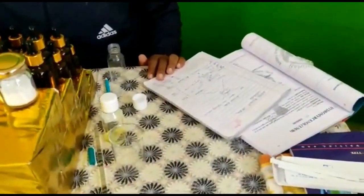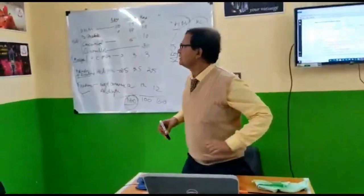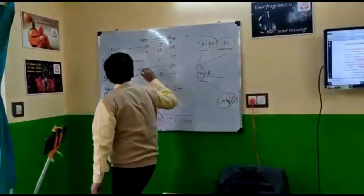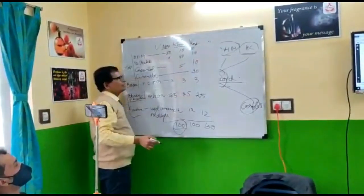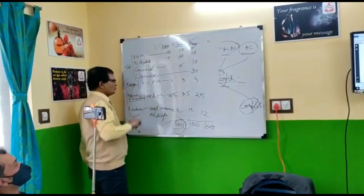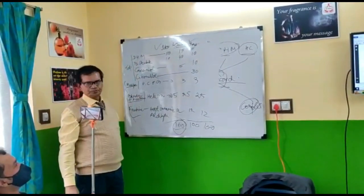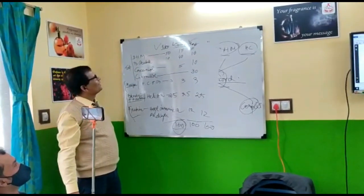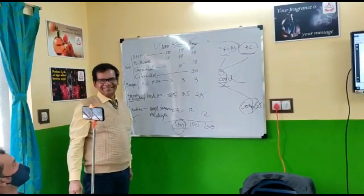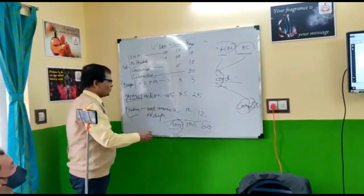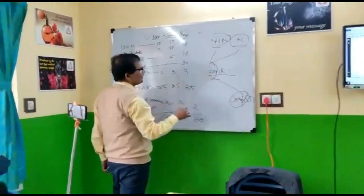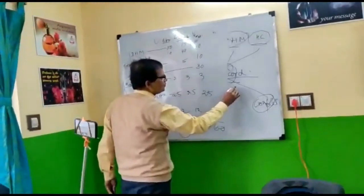Perfume formulation course for soap, granules, detergent, liquid detergent, and dishwash liquid will be on 24th April 2022, with a fee of 1,500 rupees. Perfume formulation for white phenyl, green phenyl, and floor cleaners will be on 1st May 2022, with a fee of 1,500 rupees. Total course fee for any specialized course is 4,500 only.